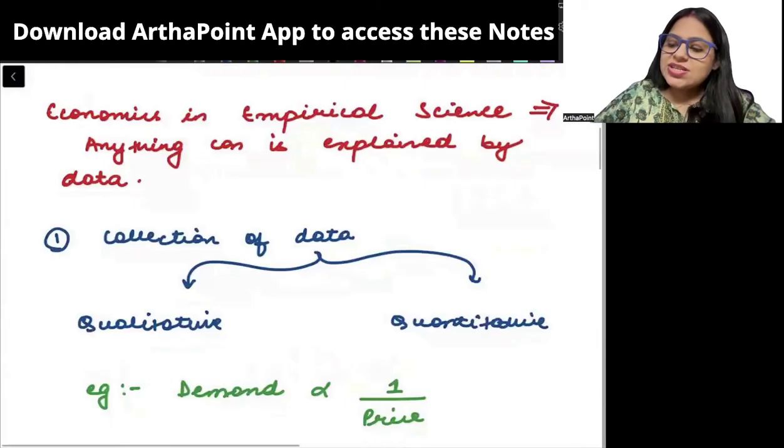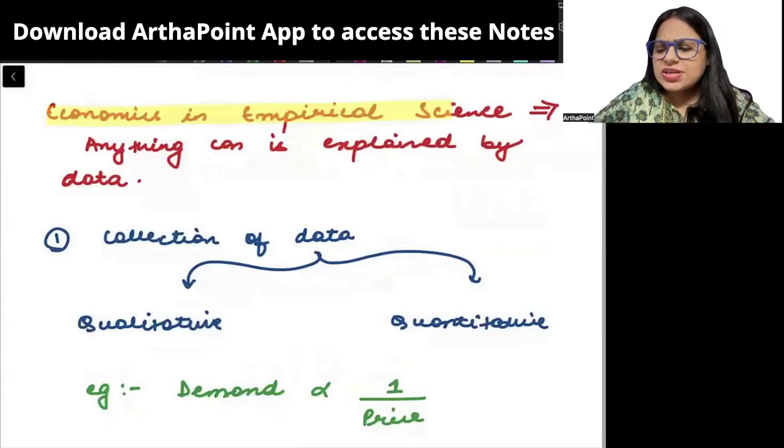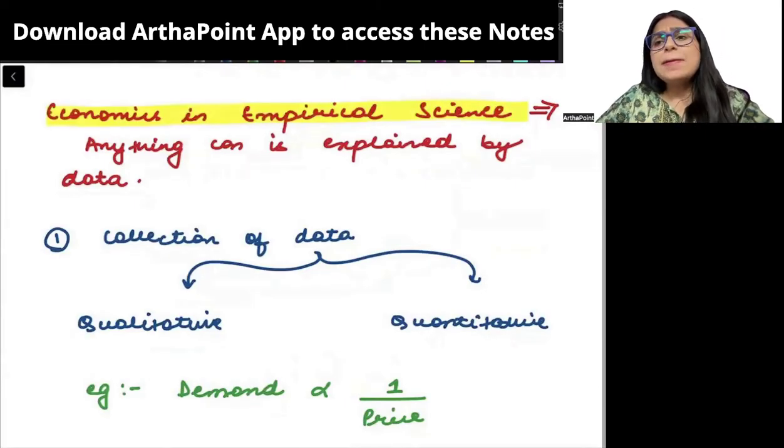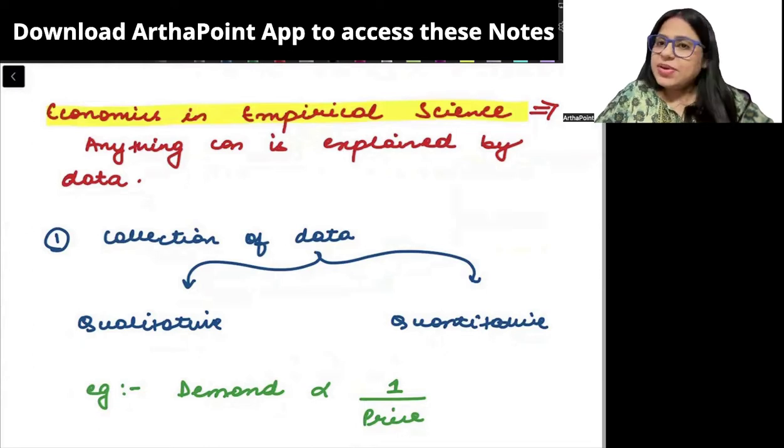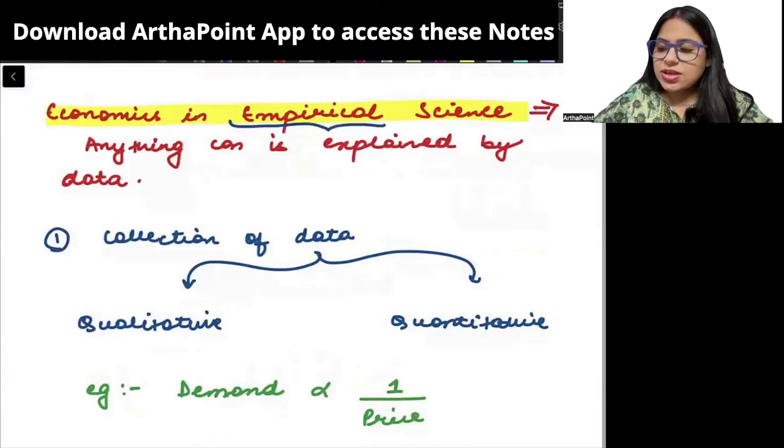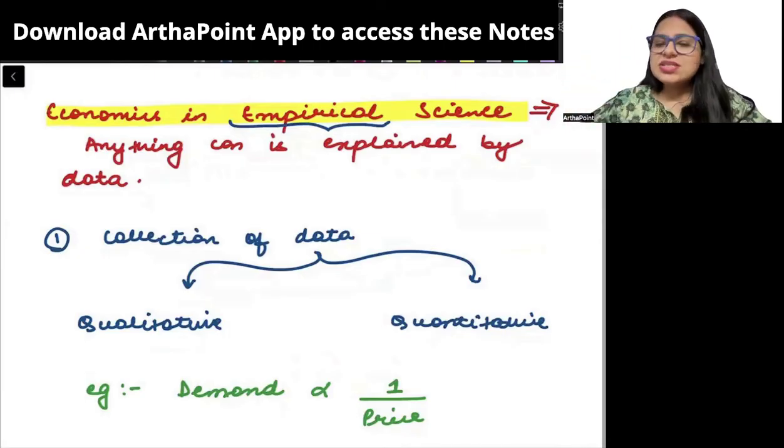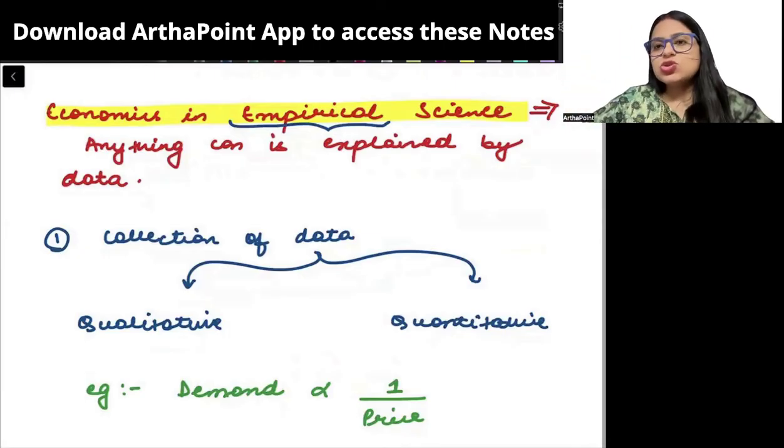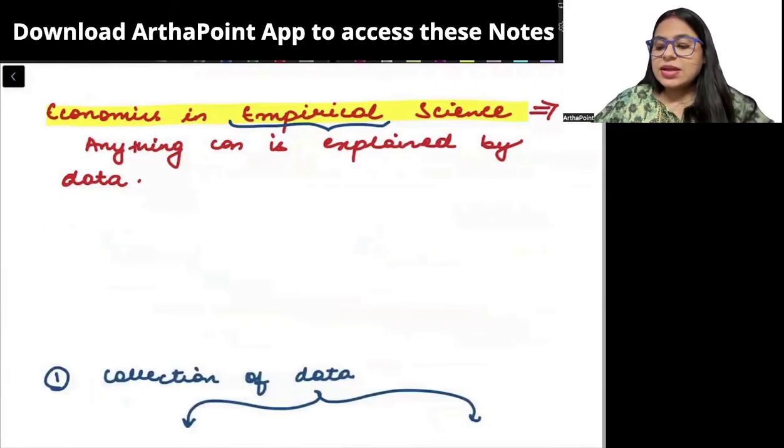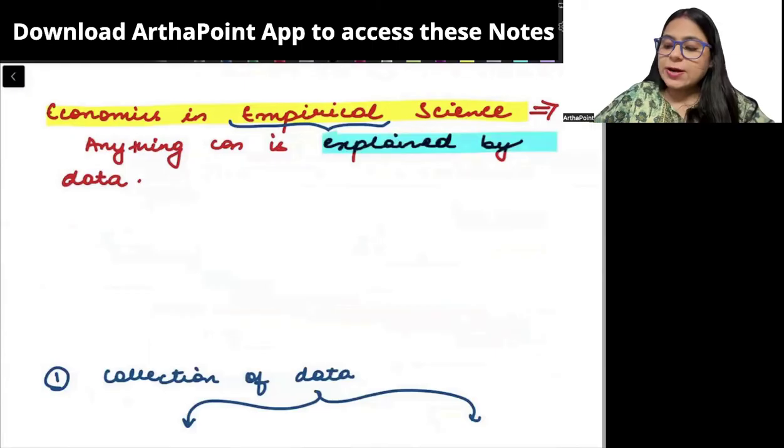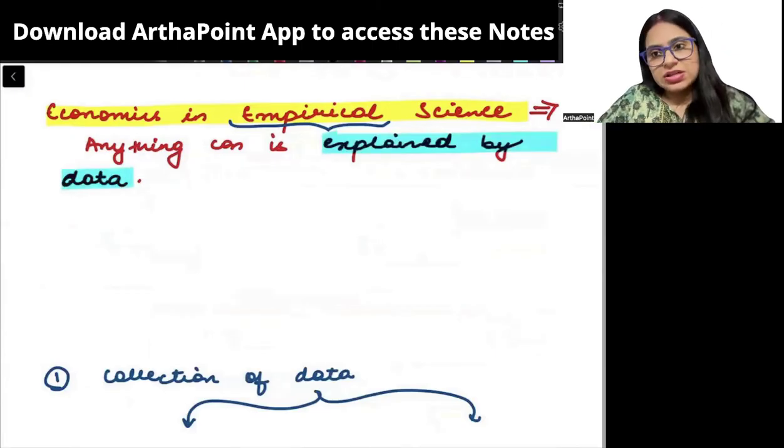Our aim is to understand how we can link economics to science and what is the science used behind economics. Economics is called an empirical science. Empirical means when we write research, we always say empirical data shows, that means past data shows. So empirical data, empirical science basically means anything that can be explained through data.